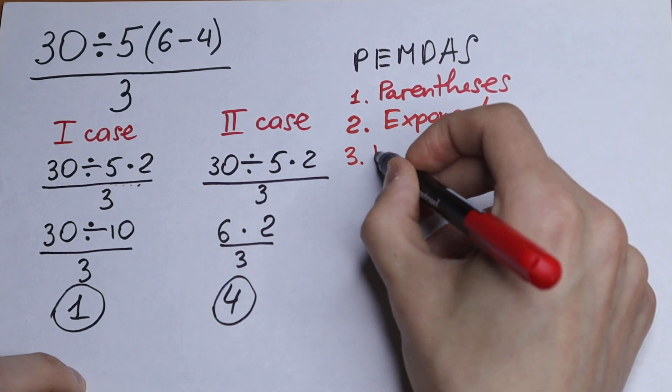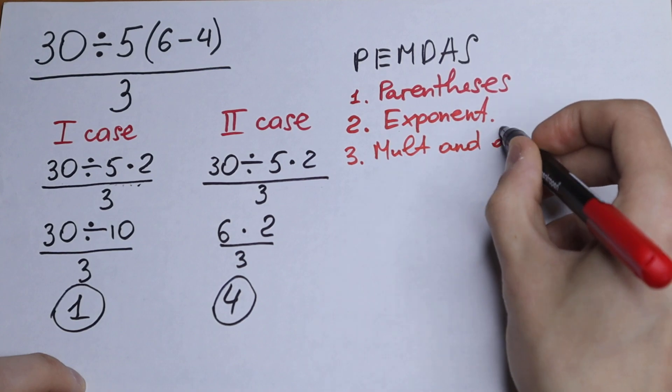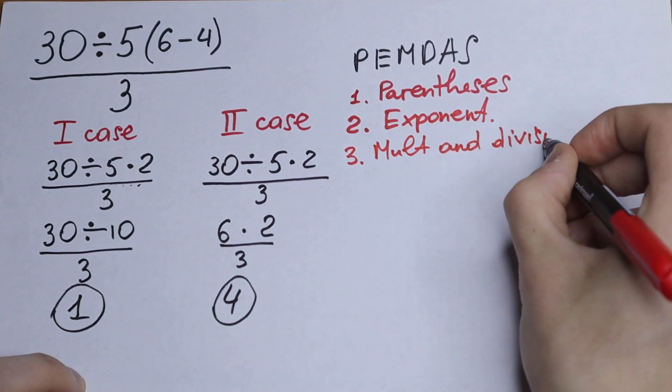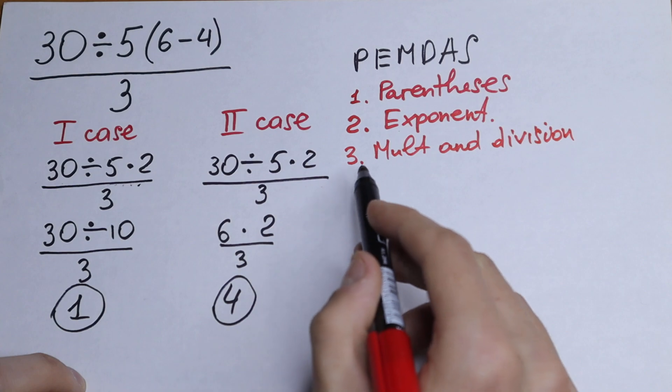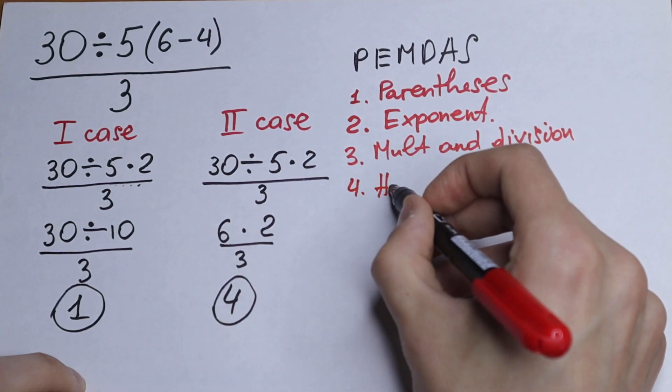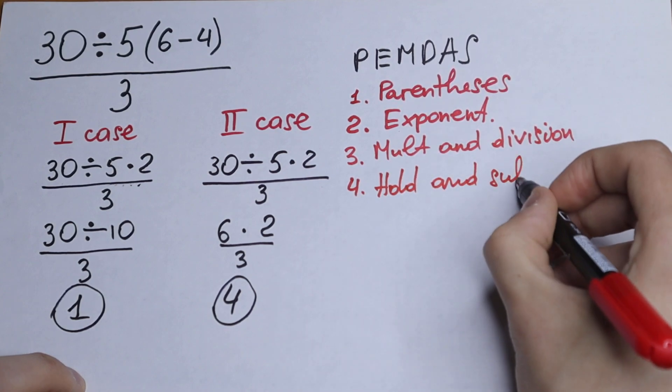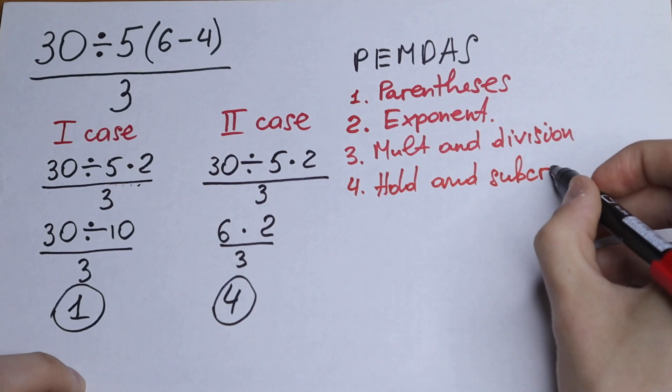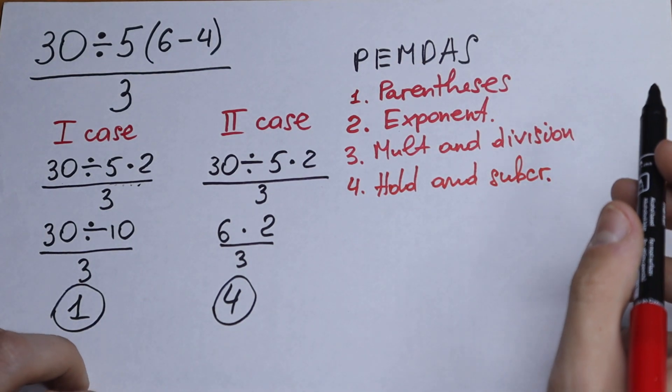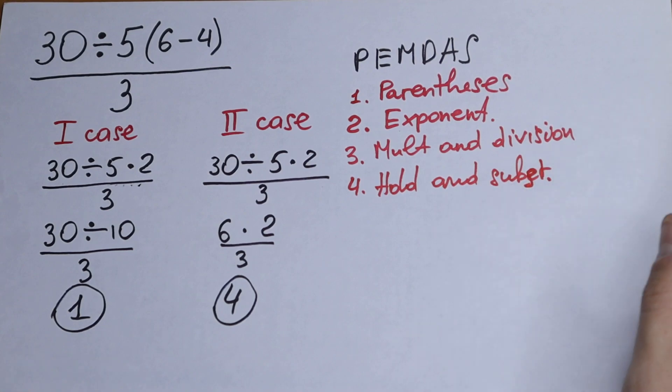Third, multiplication and division. This is the question. This is our question. And the fourth addition and subtraction. We don't have this right here, but I write it and subtraction.